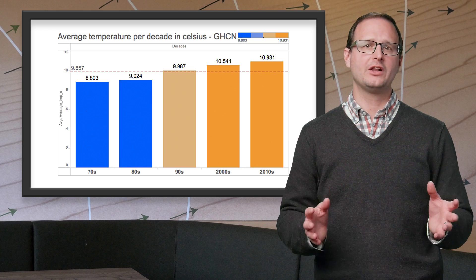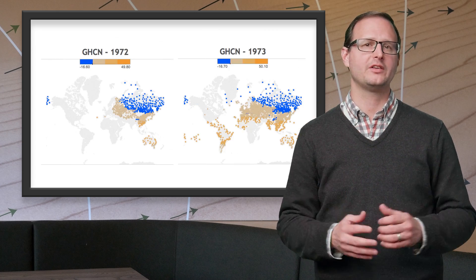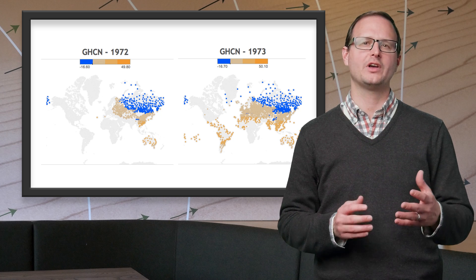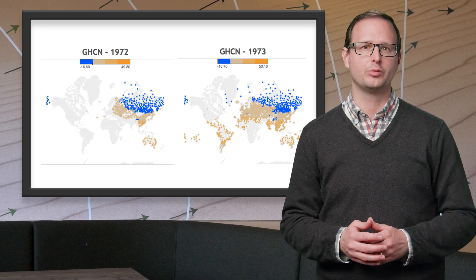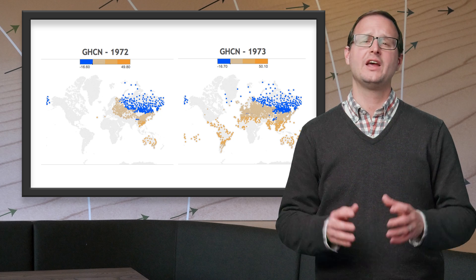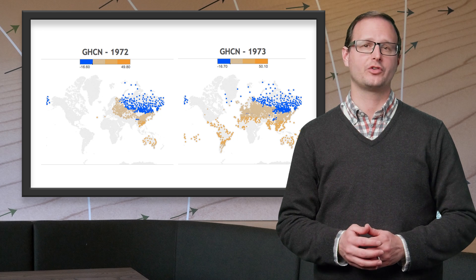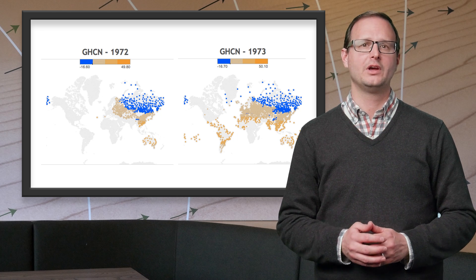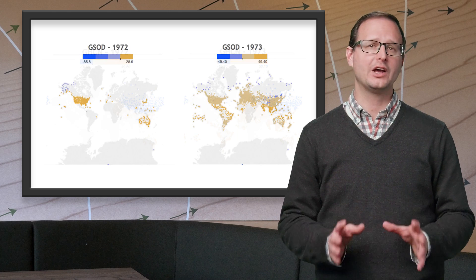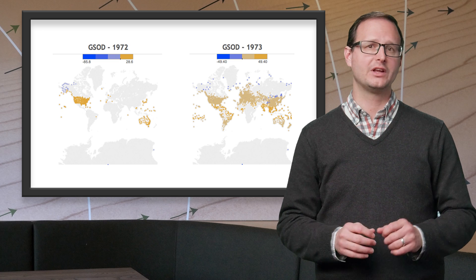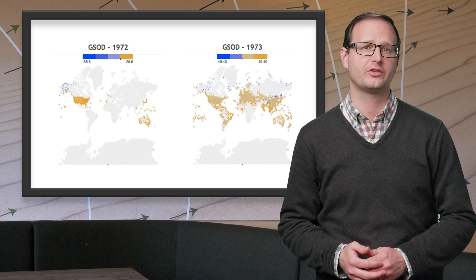For our analysis to be meaningful, we start in 1973, the year after which there aren't big jumps in the number of reporting stations and there is reasonable global coverage. Our averages include every station with at least 300 measurements in a given year to avoid seasonal bias.